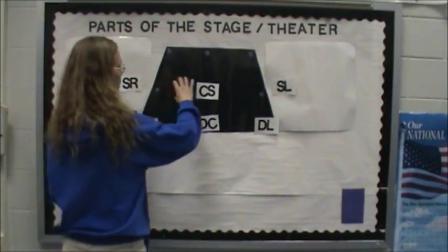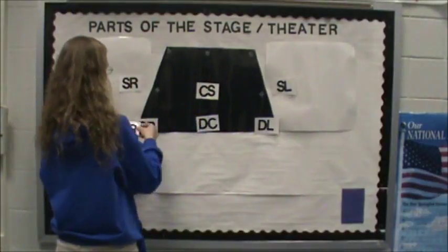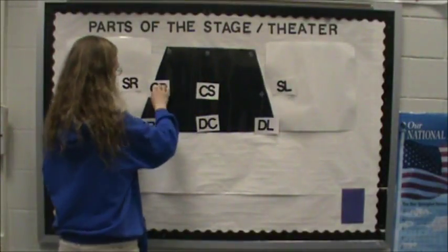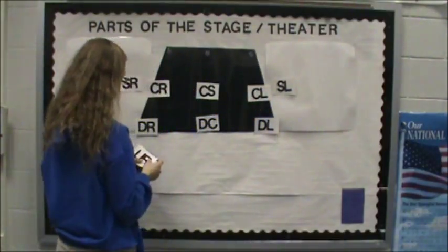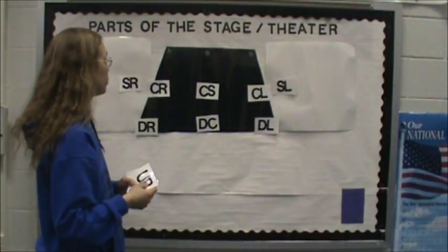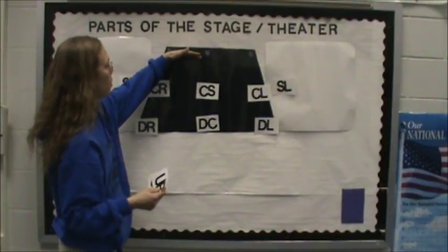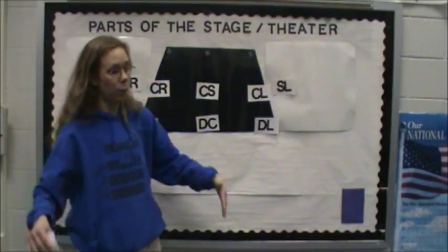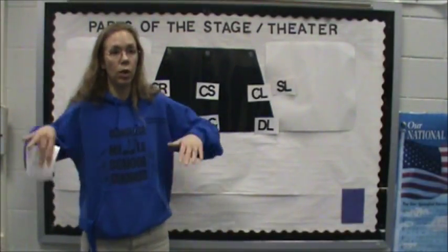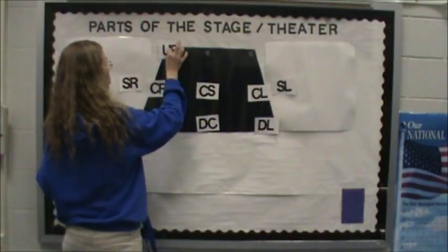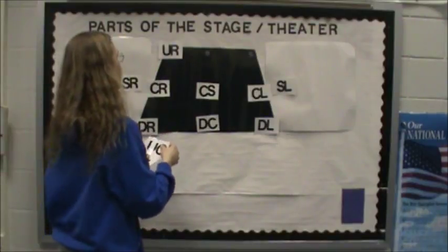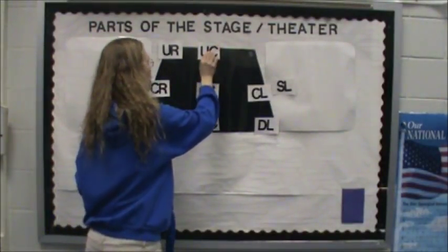Because this is the center part of the stage, we have center stage right and center stage left. Because remember in the back, that would be the upstage part because it slanted upward and looked forward at the audience. This would be considered upstage right. This is upstage center.